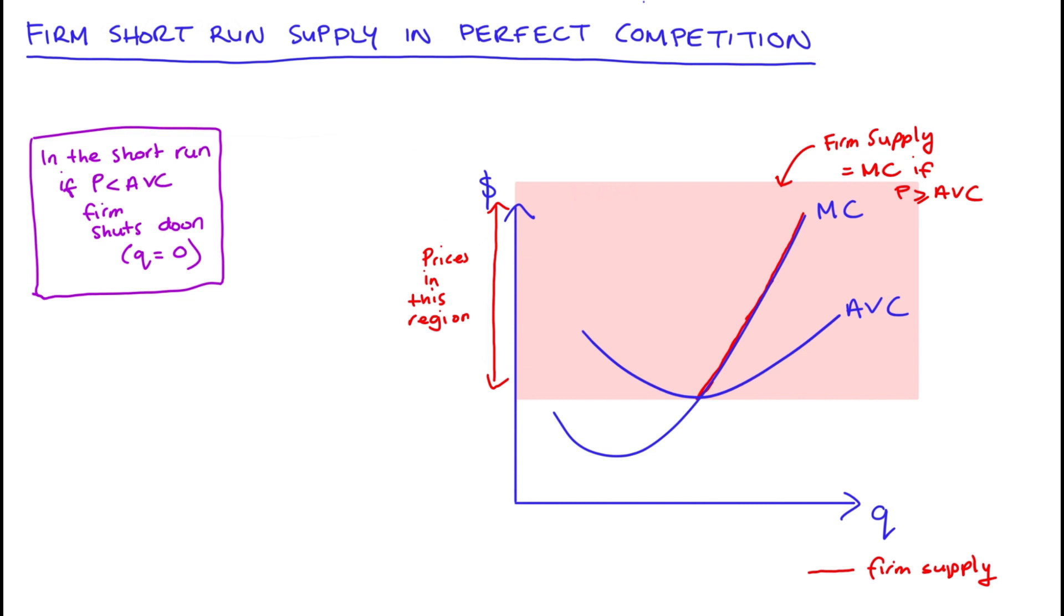they will be above average variable costs, they'll be high enough, and firm supply can be tracked by marginal cost.